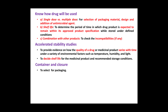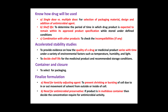Container and closure are selected for packaging. In the finalized formulation, we need to check the tonicity by adding a tonicity-adjusting agent. We add this agent to prevent the shrinking and bursting of cells due to osmotic movement of solvent molecules. The parenteral solution must be isotonic and not hypotonic or hypertonic. We also have to add an antimicrobial preservative if the product is in a multiple dose container, to increase the life of the product.